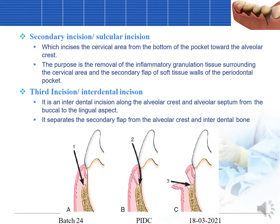The secondary incision incises the crevicular area from the bottom of the pocket towards the alveolar crest. Its purpose is removal of inflammatory granulation tissue surrounding the crevicular area and the soft tissue walls of the periodontal pocket. The third incision — the interdental incision — is placed along the alveolar crest and the alveolar septum from the buccal to the lingual aspect, separating this chunk of pocket wall from the tooth surface.